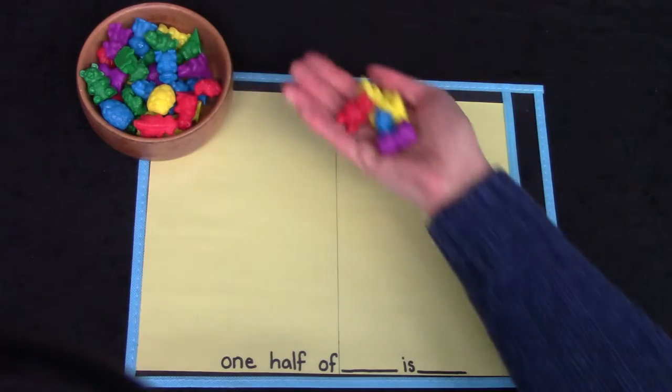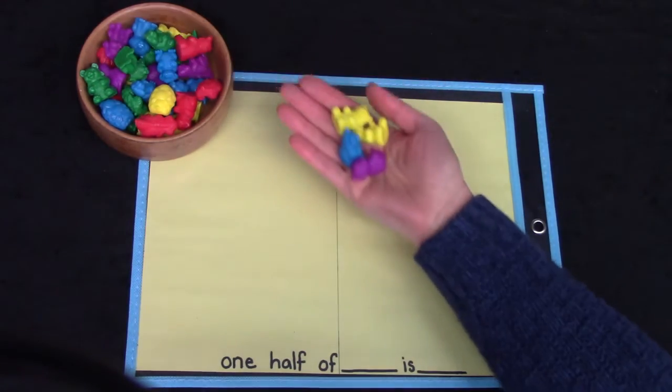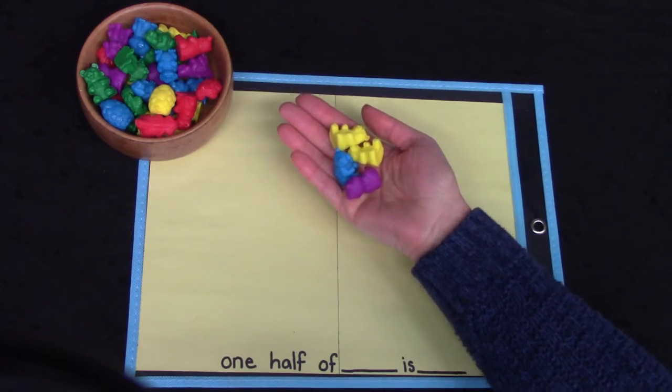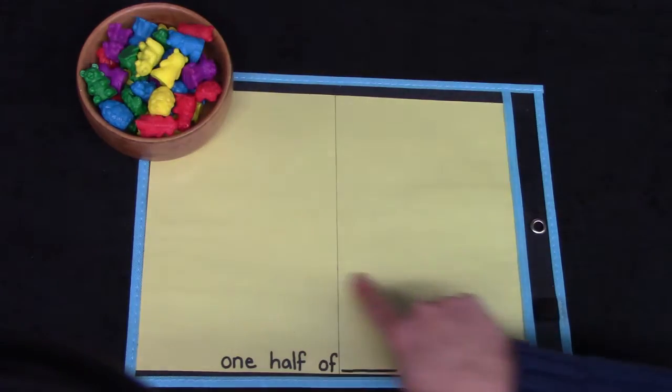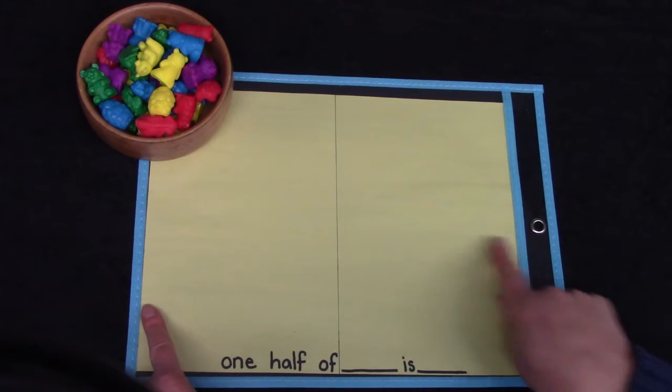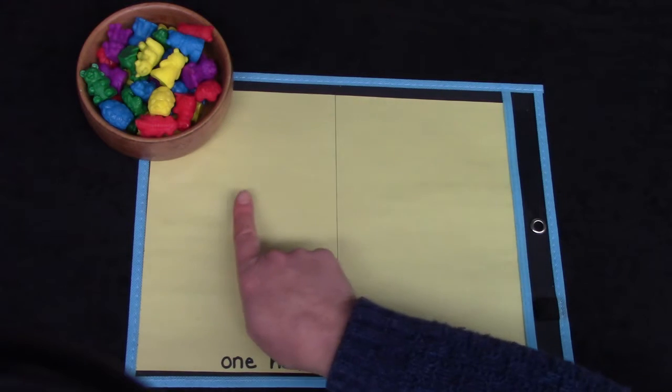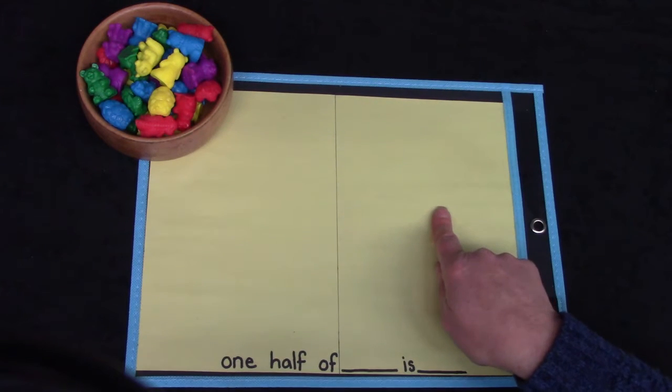Let's take a look. Today we are going to be learning how to divide a set of even objects in half. I'm going to be using this piece of paper as my working mat. I would like for you to get a piece of paper too. You can fold it in half. I folded mine and then I drew a line down the center. And then our paper will have one, two parts.